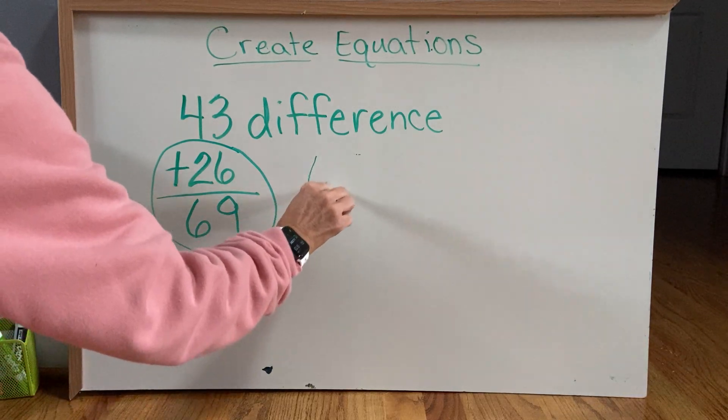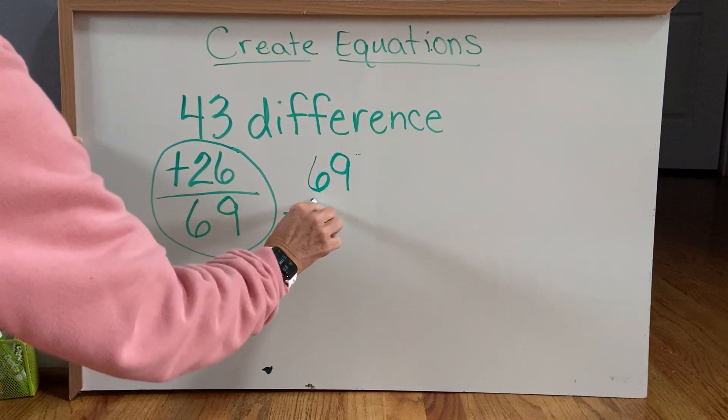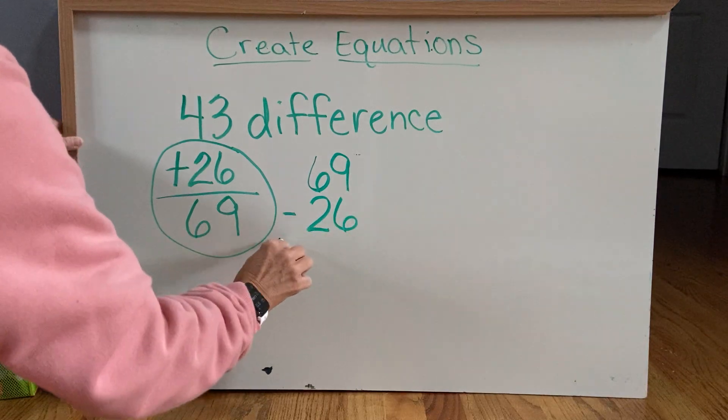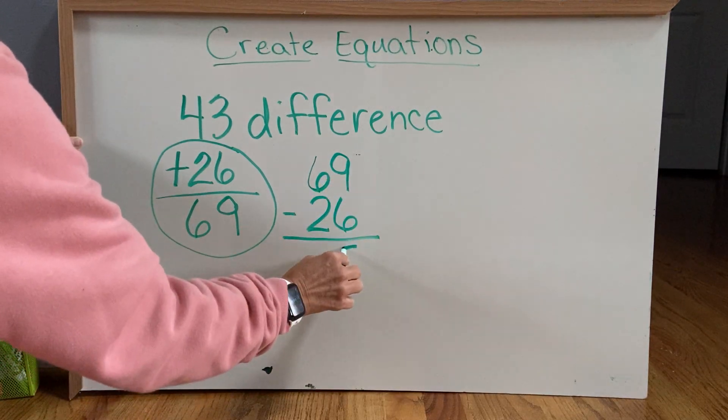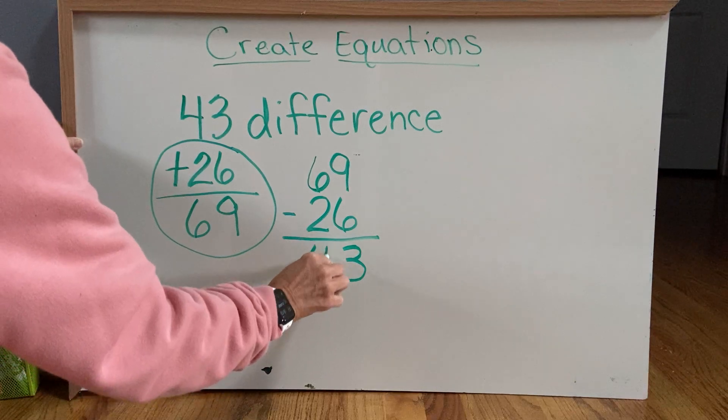So let's take the bigger number, 69, minus the smaller number, 26. 9 minus 6 is 3, and 6 minus 2 is 4.